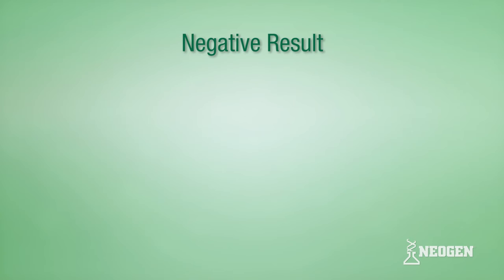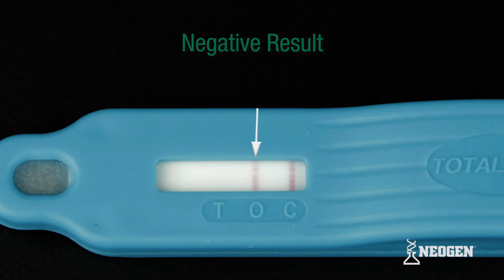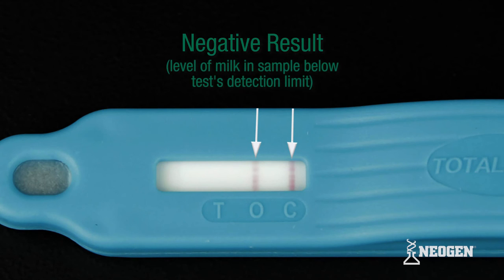Negative result. Lines visible at positions O and C, but not at T, indicate a negative result. The level of milk in the sample was determined to be below the test detection limit.